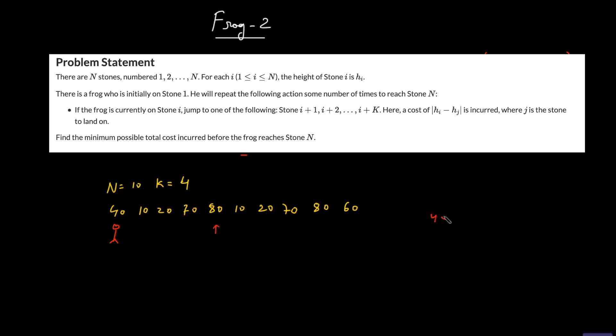Let's say from 40, he moves to 70. From 70, he moves to again 70. And from this 70, he moves to 60. So what will be the total cost? The total cost incurred will be 30, 0, and 10, which makes it a sum of 40.